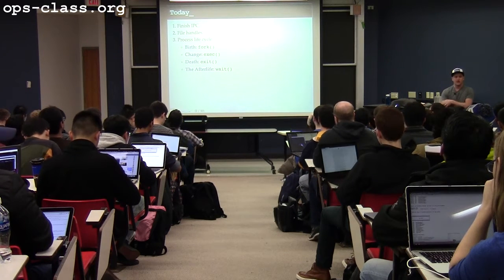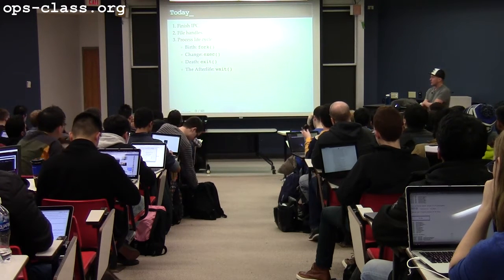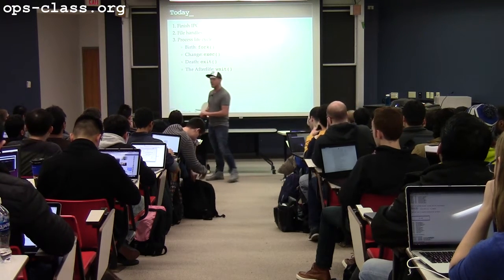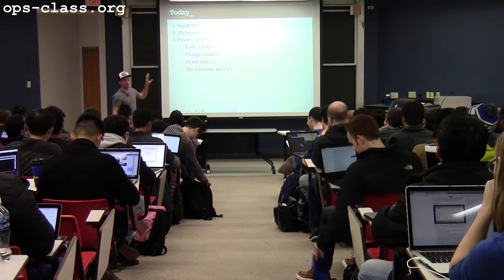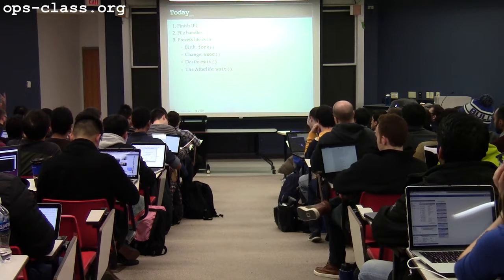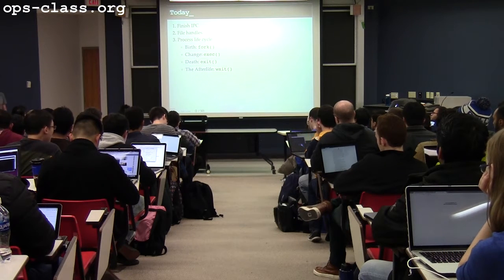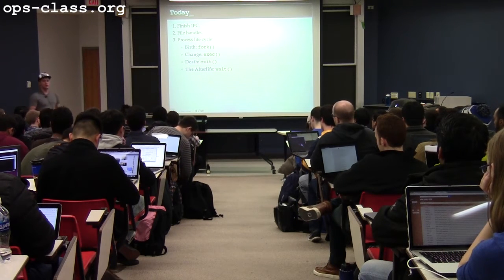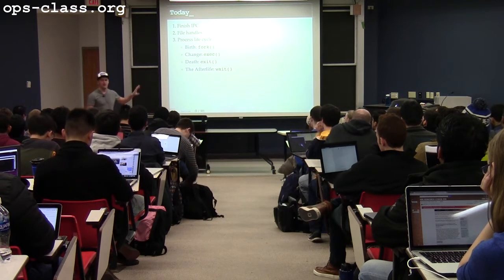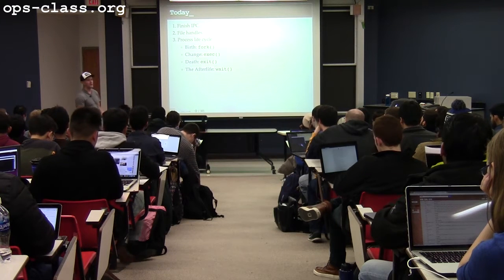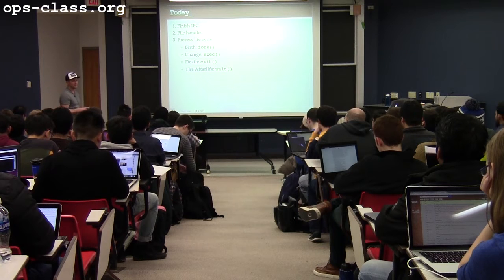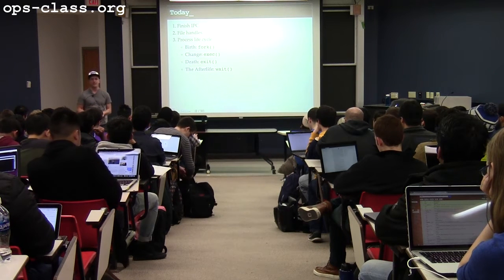Today we're going to finish talking about IPC, and then we'll talk a little bit about file handles. We'll extend our process model a little bit, at which point we'll start to talk about the core system call interface that we use to deal with processes. The kernel is a program; the kernel provides an interface to processes, which are the most important users of the kernel interface. We'll start talking about some of the core parts of the system call interface dealing with process creation and the process lifecycle.